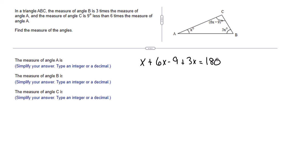I like to put like terms next to each other before I do anything, so let's do that. X plus six X plus three X minus nine equals 180. Now let's collect our like terms.